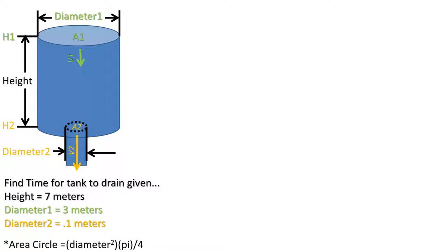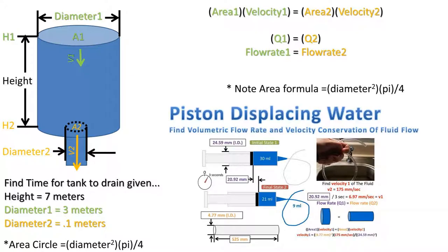How do we go about solving this one? Well, recall from the piston displacing water video that the Q, or flow rate, is conserved. So the same volume that the tank is lowering by is the same volume leaving the tank. This means we can take area 1 times velocity 1, and set it equal to area 2 times velocity 2. Cross-sectional area times the velocity of the fluid through that cross-sectional area is the flow rate at that point.